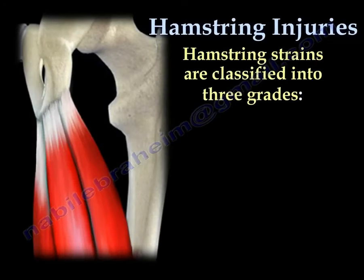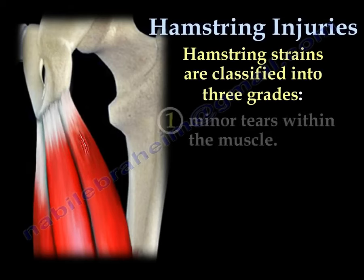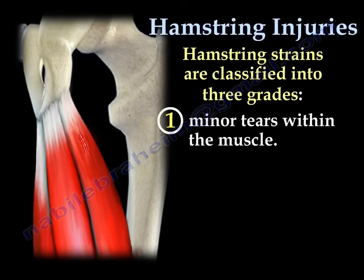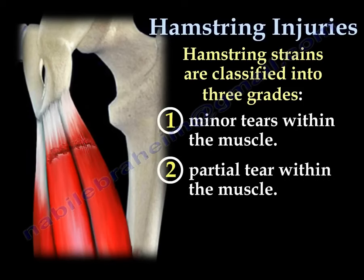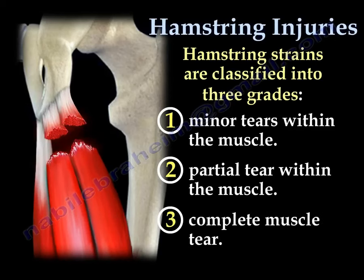Hamstring strains, or pulled hamstrings, are classified into three grades: a minor tear within the muscle, a partial tear within the muscle, and a complete tear of the muscle.